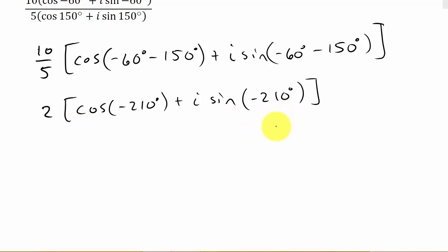Let's go ahead and write our answer in rectangular form. I need to figure out what the cosine and sine of negative 210 degrees is. There are a couple of ways we can do this. I think the best way is to use coterminal angles. What we can do is add 360 to this negative 210 to get the angle between 0 and 360 so we can evaluate them.